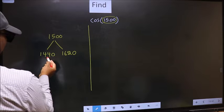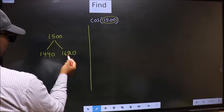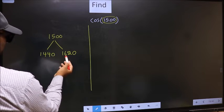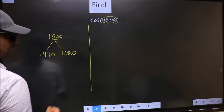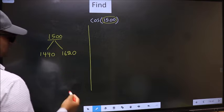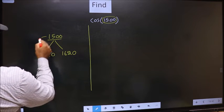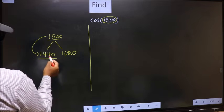This is 180 times 8 and this is 180 times 9. Between these two numbers, 1500 lies. Next, 1500 is close to which number? This is close to 1440.